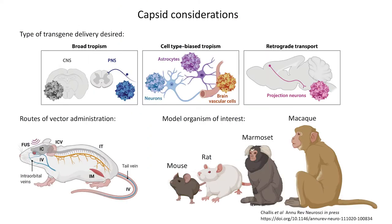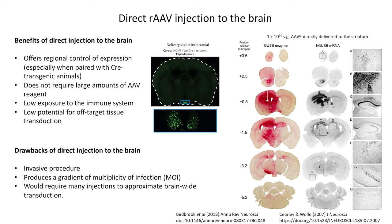One of the first big choices you have to make with AAV is which capsid serotype to use. This will depend on the type of transgene delivery desired and the route of administration available for your model organism of interest. The traditional route of administration is direct injection to the site of interest. Direct injection to the brain has several advantages, including low dose requirements, low exposure to the immune system, and limited off-target tissue transduction. When paired with CRE transgenic mice, this method can provide exquisite precision of transgene targeting. But it is an invasive and often injurious procedure, which provides only partial coverage with a gradient of transgene expression levels — very high right at the site of injection, then radially tapering off over the course of a few millimeters.